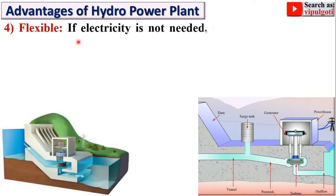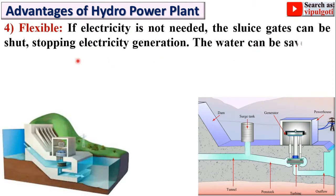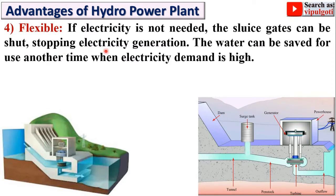Next: Flexible. If electricity is not needed, the sluice gate can be shut, stopping electricity generation. The water can be saved for use at another time when electricity demand is high.